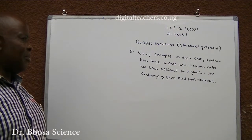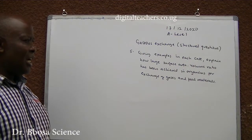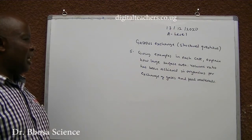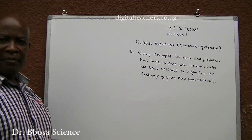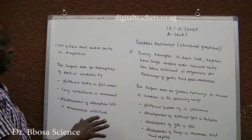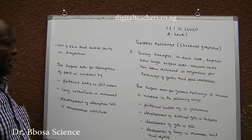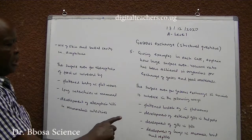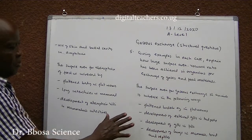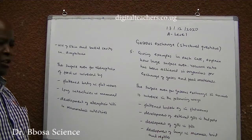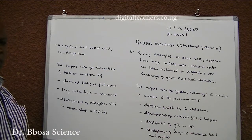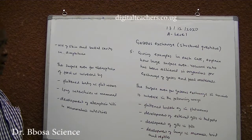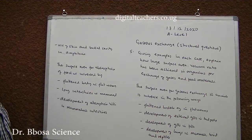Number 5: Giving examples in each case, explain how large surface area to volume ratio has been achieved in organisms for exchange of gases and food materials. You can pause and answer. The surface area for gaseous exchange in animals is increased by: 1. Development of lungs in fatty mammals. 2. Development of external gills in tadpoles. 3. Development of gills in fish. 4. Development of lungs in mammals, birds and reptiles. 5. Use of skin and buccal cavity in amphibia.